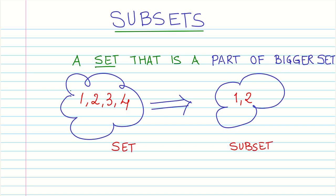So let us look at this cloud which shows a set of four numbers 1, 2, 3, and 4. Let us say that this is our set and what we do is we just take two numbers out of this, or two elements 1 and 2, and put it into another set. Then this is a subset because it is a smaller part of this bigger set over here and that is what a subset is.